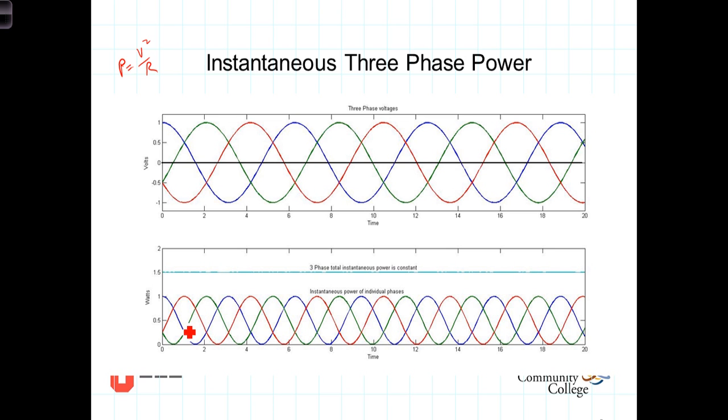And although each of them individually goes to zero, you'll notice that as the C phase here has zero power, the A phase has a non-zero, and the B phase has a non-zero, and when you add those three phases together, you get a constant equal to 1.5 times the magnitude of the individual phases.